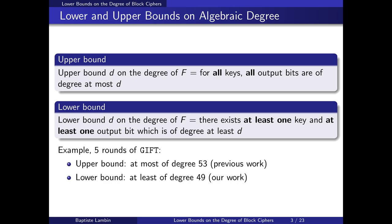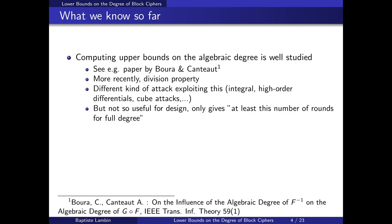For example, on five rounds of GIFT, with some previous work we can show that the degree is at most 53, and with our work we can show that the degree is actually at least 49. These upper bounds were quite well studied before — see for example the paper by Boura and Canteaut — and more recently we also have the division property, which I will talk about later. With these upper bounds we can already derive some attacks like integral and higher-order differential attacks on block ciphers, which essentially exploit the fact that if we don't have enough rounds the degree is too low.